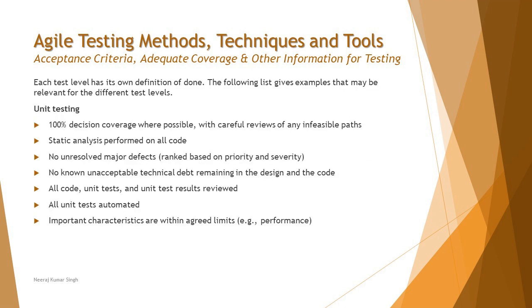Following that, we talk about the different test levels conducted as part of testing, where the definition of done for each test level is very important and critical to determine. For unit testing, the definition of done includes 100% decision coverage where possible with careful reviews of any infeasible parts, static analysis performed on all code, no unresolved major defects, no unknown or unacceptable technical debt remaining in the design and code, and all unit test results reviewed.